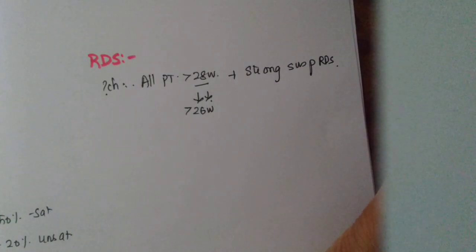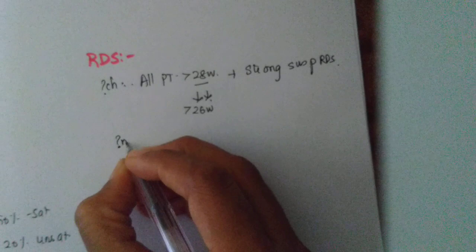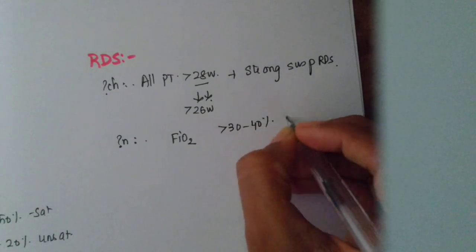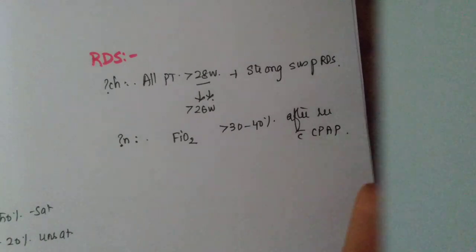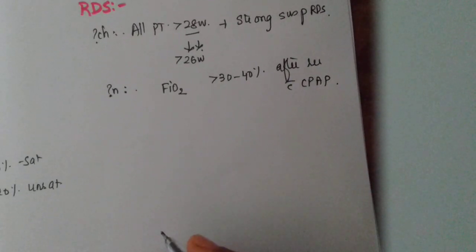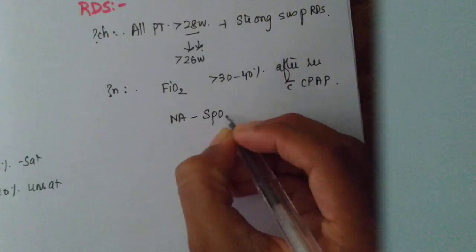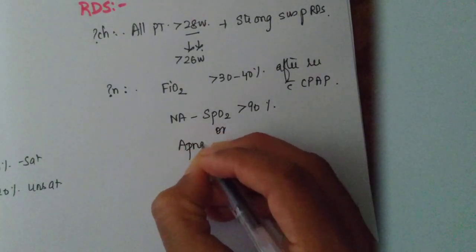So more than 28 weekers plus a strong suspicion of RDS. What is a strong suspicion? You see the baby who's struggling to breathe, you know this baby is not going to have surfactant. Is there something that you can objectively assess and do? So when do you give it? When the FiO2 requirement is more than 30 to 40 percent after recruitment with CPAP. So as soon as a preterm baby is born the delivery room CPAP is being practiced more and more nowadays. So you have recruited the lung well but despite that this baby is requiring more and more oxygen and the child is not able to maintain a saturation of more than 90 percent or the child is becoming apneic multiple times then yes this child might require a surfactant.